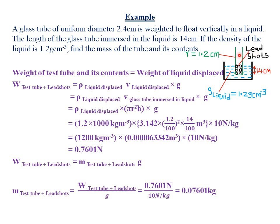Because weight equals mg, if we find the weight of the glass tube plus the lead shots, we can find the mass. Since the body is floating vertically in the liquid, the sum of upward and downward forces are in balance. The downward force is the weight of the glass tube plus the lead shots; the upward force is the upthrust force.